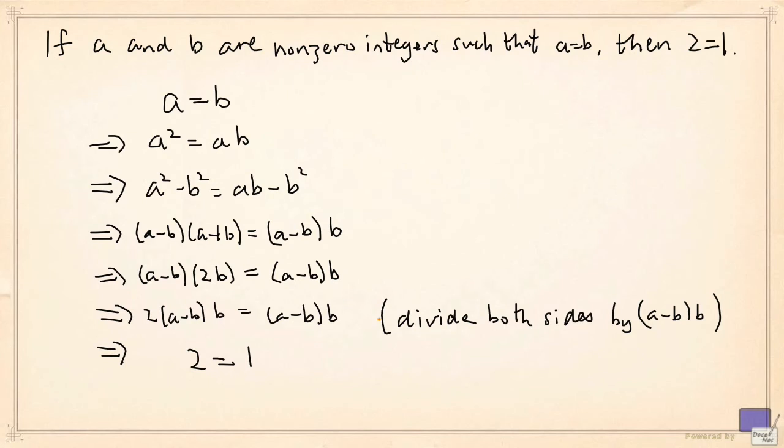So we are dividing both sides by 0. And dividing by 0 is not a valid operation. And that is why this is a false proof.